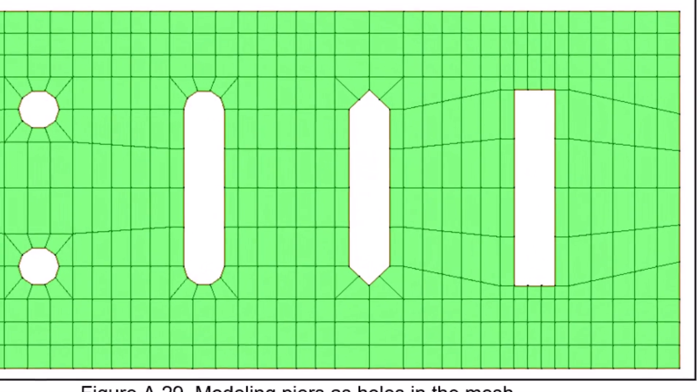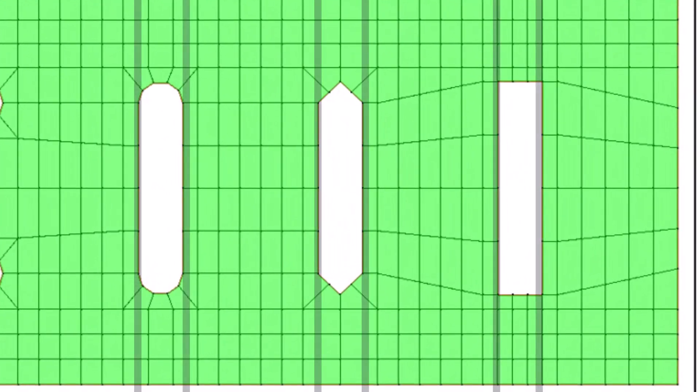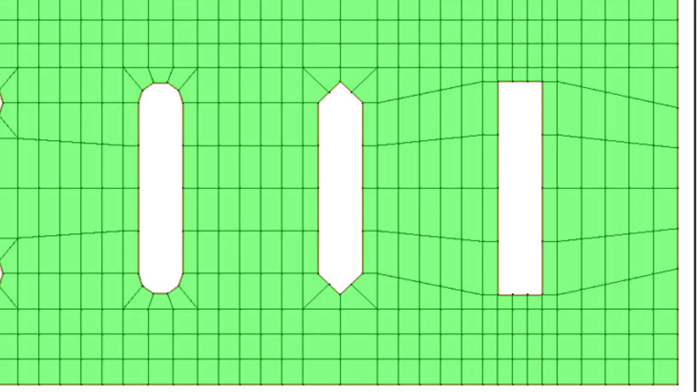Typically, the pier width would be used for the element size. No more than three elements needs to be used across the pier width.